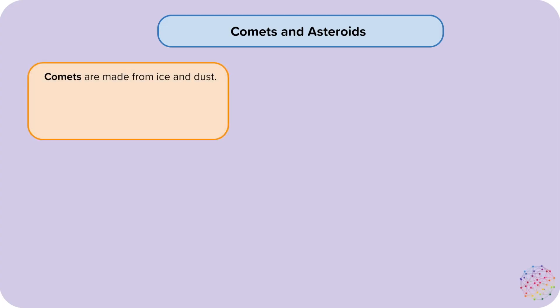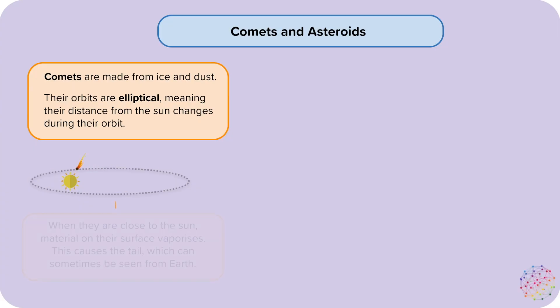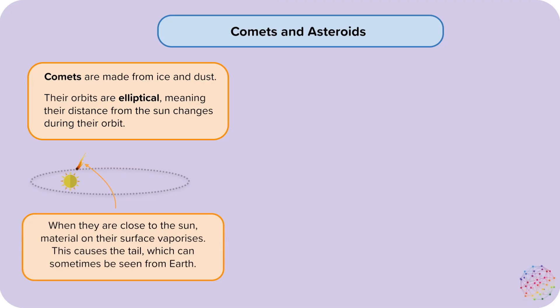Comets are made from ice and dust. Their orbits are elliptical, as shown in this diagram, meaning their distances from the sun change during their orbit. At some points they are very close to the sun, whereas at other points they are much further away. When they are close to the sun, material on their surface vaporizes. This causes the tail, which can sometimes be seen from Earth.